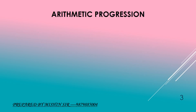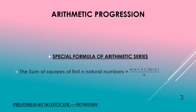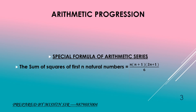In this video, we will be learning the special formula of arithmetic series. The sum of squares of first n natural numbers is n into n plus 1 into 2n plus 1 upon 6.